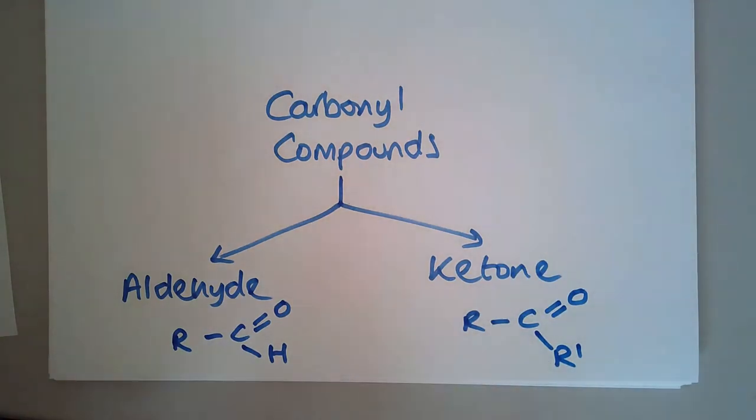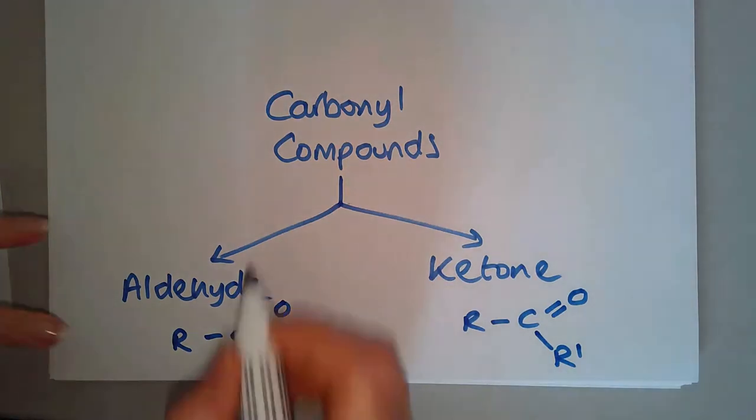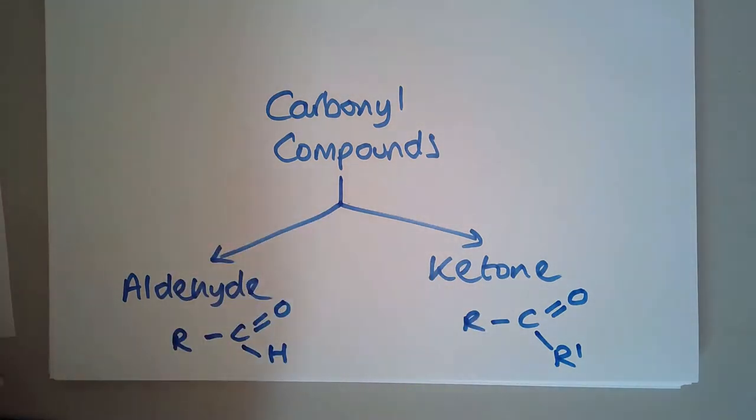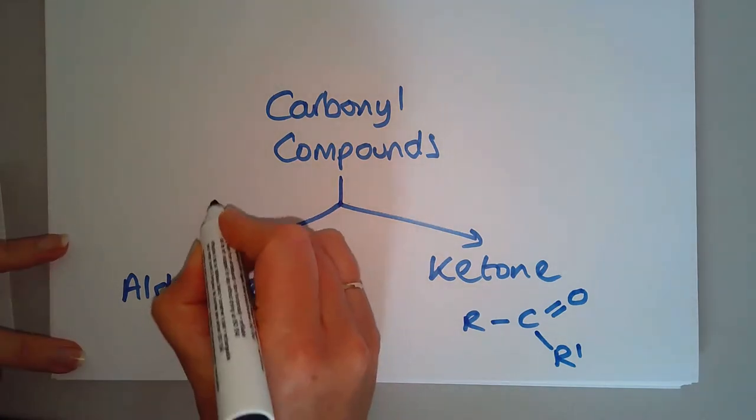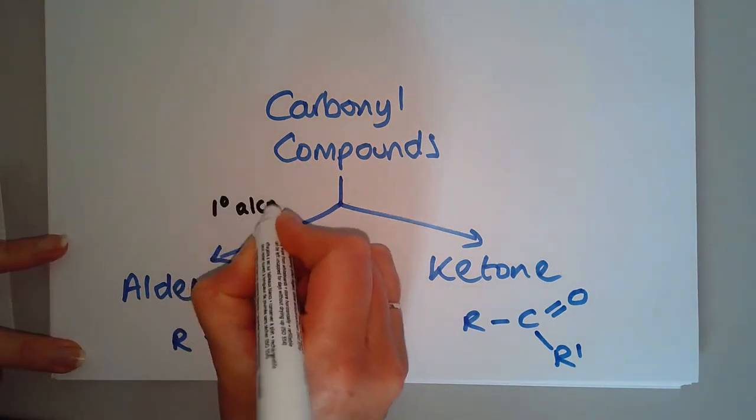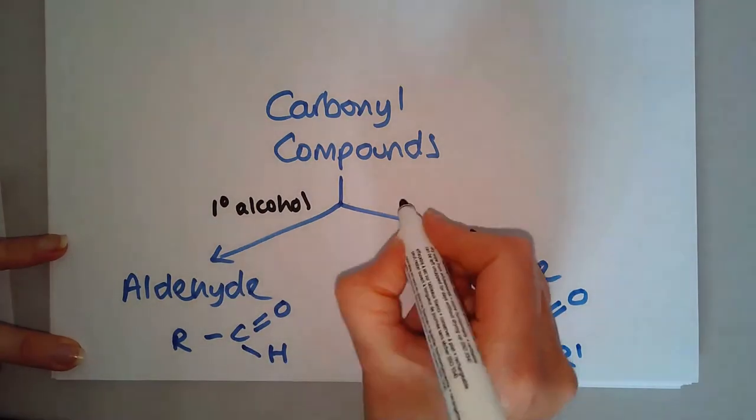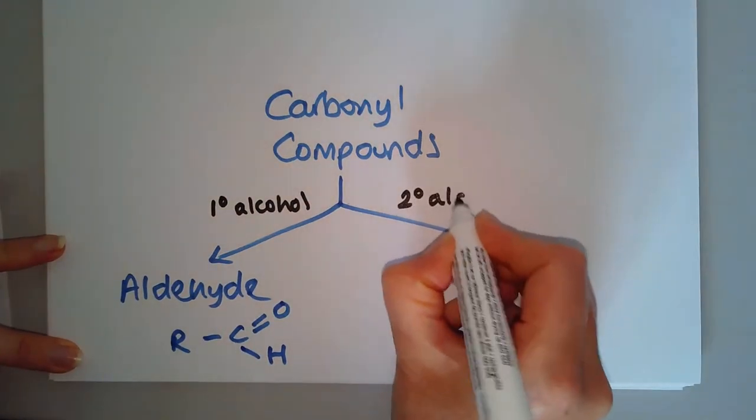If you remember back from year 12, we actually make them from alcohols, and it's important that you can classify alcohols because for an aldehyde you need a primary alcohol to start with, whereas for a ketone you need a secondary alcohol.